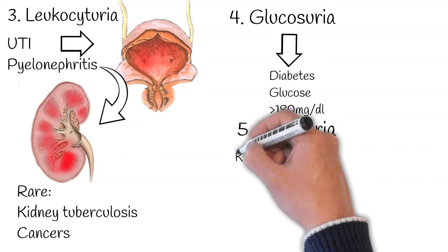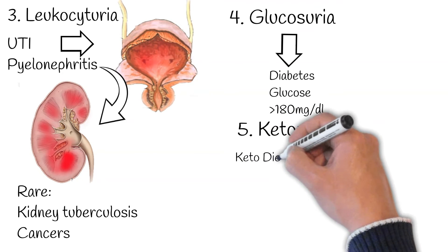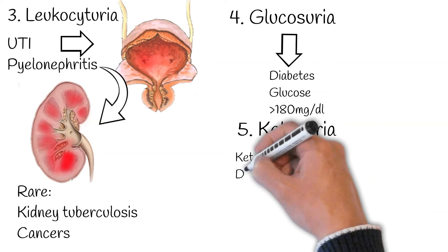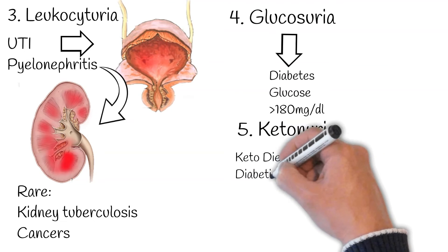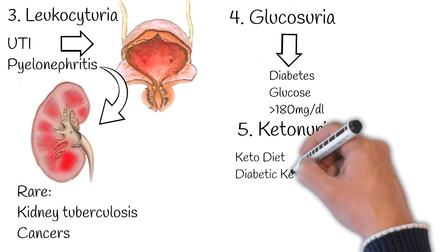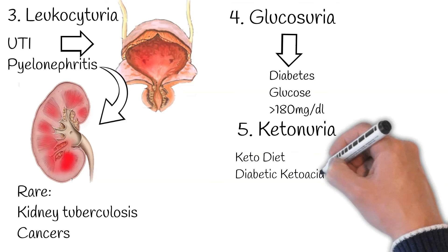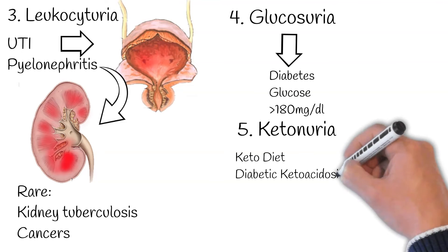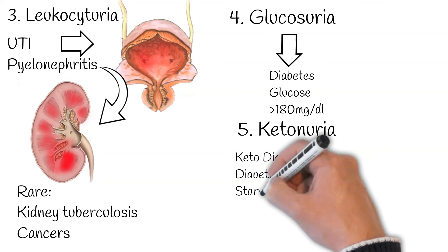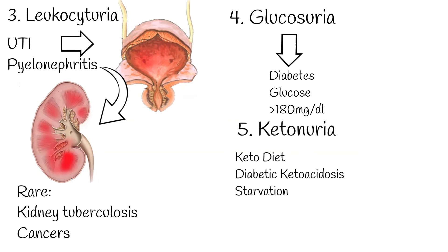Ketonuria denotes the urinary excretion of ketone bodies, which are generated when the body metabolizes fat for energy. This occurs in scenarios where glucose or insulin is insufficient to derive energy from carbohydrates. The appearance of ketones in urine can stem from dietary choices, like the keto diet, which limits carbohydrate intake.